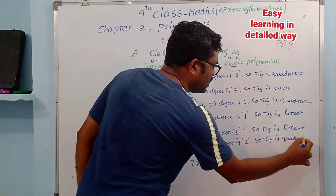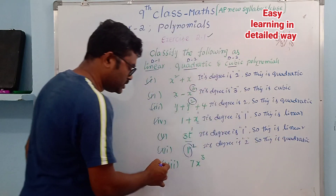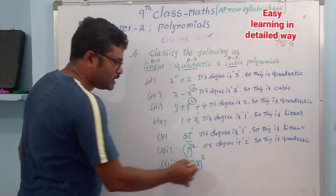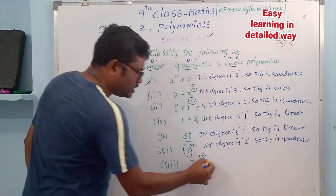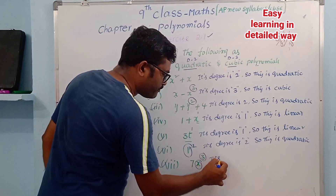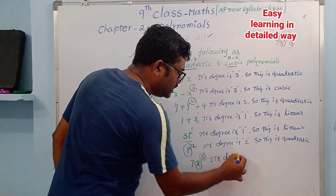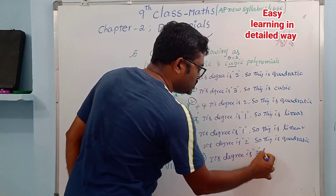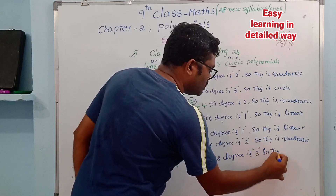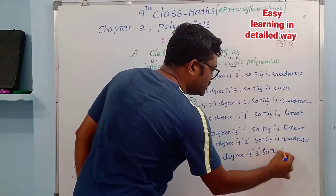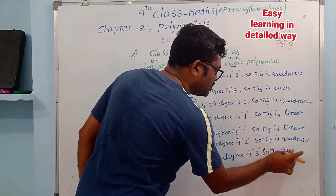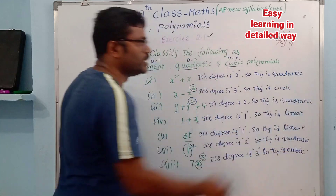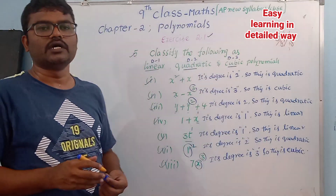R squared: R is the variable with highest power 2, so degree is 2 — this is quadratic. Last one, 7x cubed: variable x with highest power 3, so degree is 3 — this is a cubic polynomial.